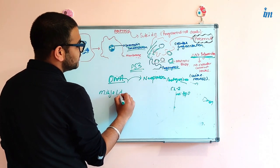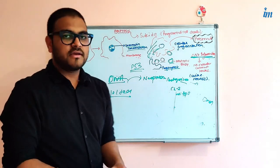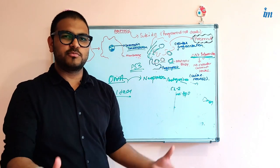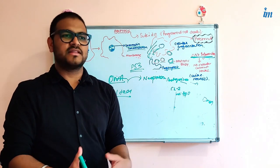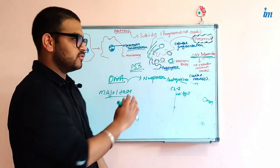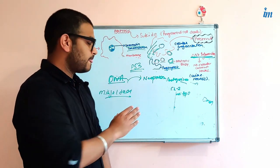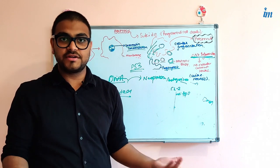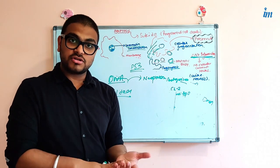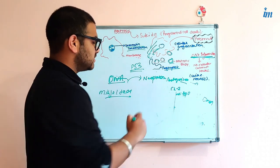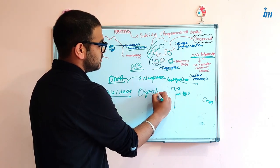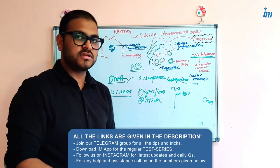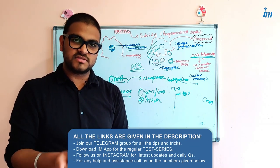Another example: if a cell has misfolded proteins, it should undergo apoptosis so it does not express misfolded and dysfunctional proteins. If it doesn't undergo apoptosis, this leads to diseases caused by protein misfolding, such as cystic fibrosis and Alzheimer's disease. These are diseases in which misfolded proteins are present and apoptosis failed to occur, leading to disease progression.